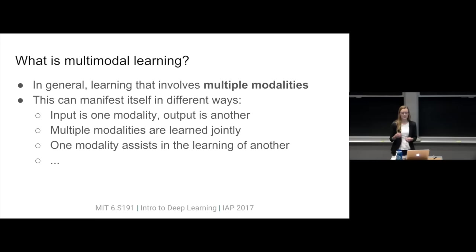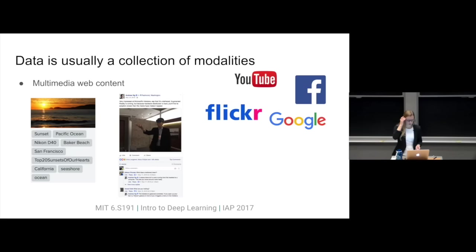It could be a model where the input is one modality and we're trying to translate it to a different modality. Or it could be that we're learning two modalities both as inputs to the model. Or it could be that one modality we've already learned and we're trying to use that to assist in the learning of a new modality. There are lots of different ways to use multiple modalities together.